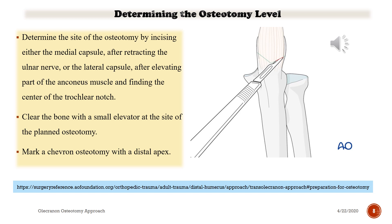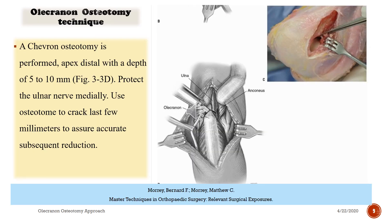Clear the bone with a small elevator at the site of the planned osteotomy. Make a chevron osteotomy with a distal apex. Note the shape of the osteotomy, the apex distally, and the depth. Protect the ulnar nerve medially, and use an osteotome to correct the last few millimeters to ensure accurate subsequent reduction.